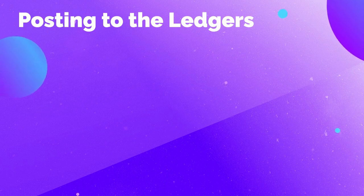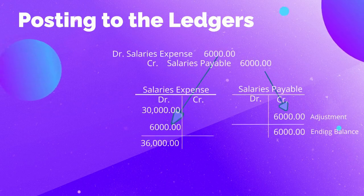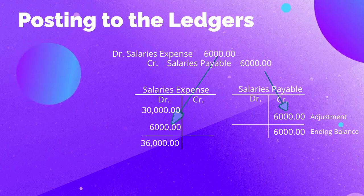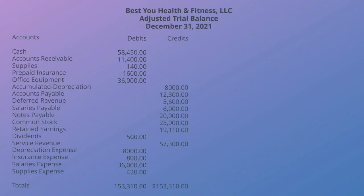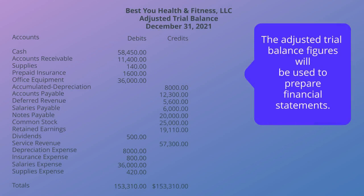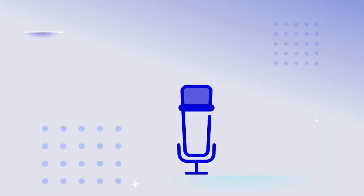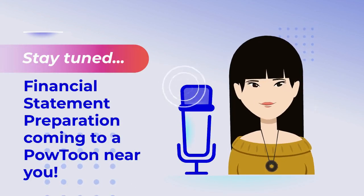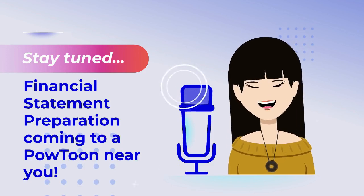The same steps are followed to post the adjustment for salaries. Once these adjustments have been posted to the ledgers, we prepare an adjusted trial balance using our latest, up-to-date figures. These figures will also be used to prepare our financial statements. Now that we've completed the adjusted trial balance, stay tuned for financial statement preparation coming to a PowToon near you. Thank you.